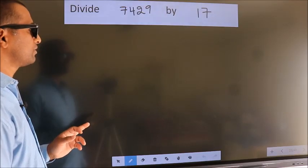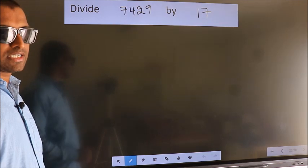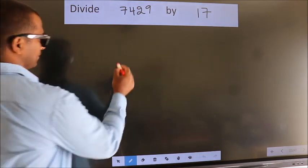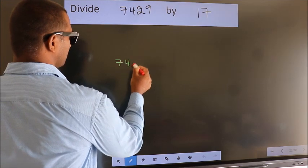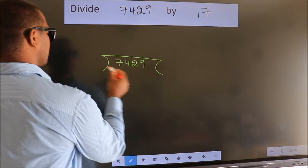Divide 7429 by 17. To do this division, we should frame it in this way. 7429 here, 17 here.